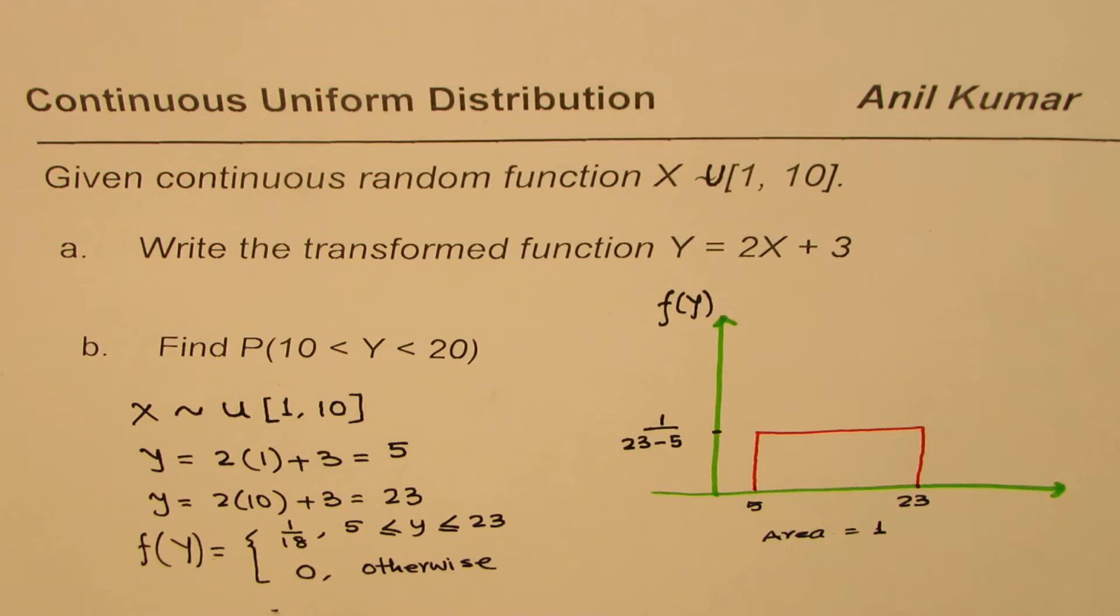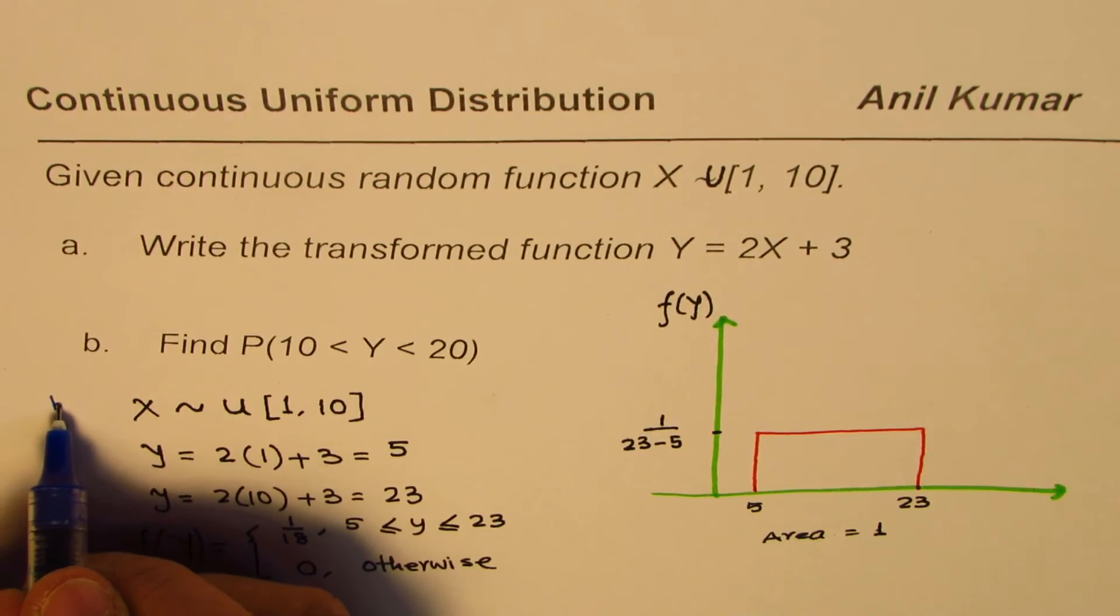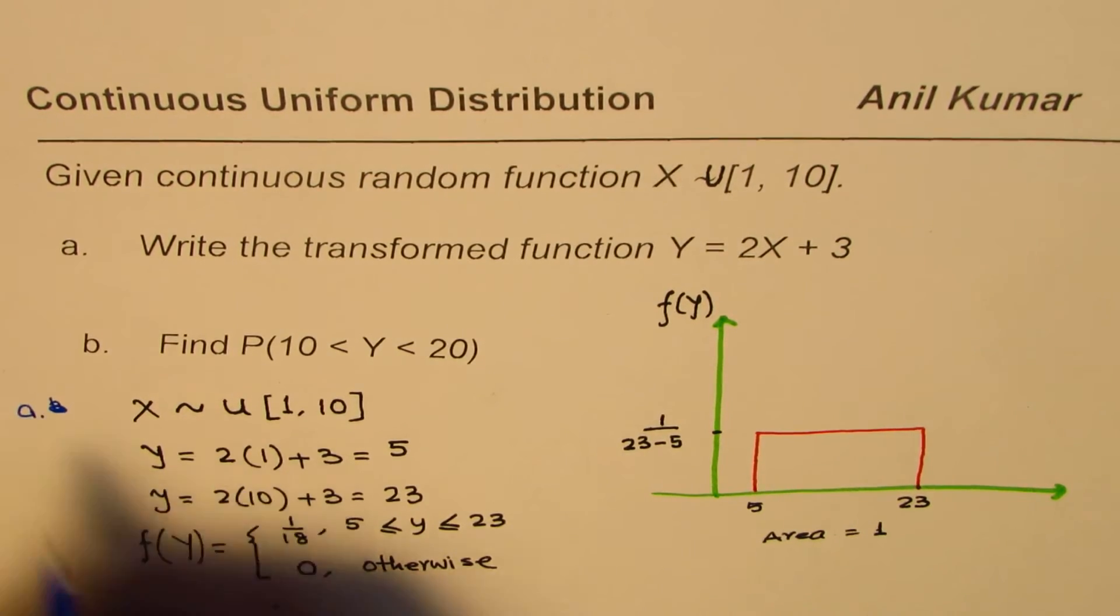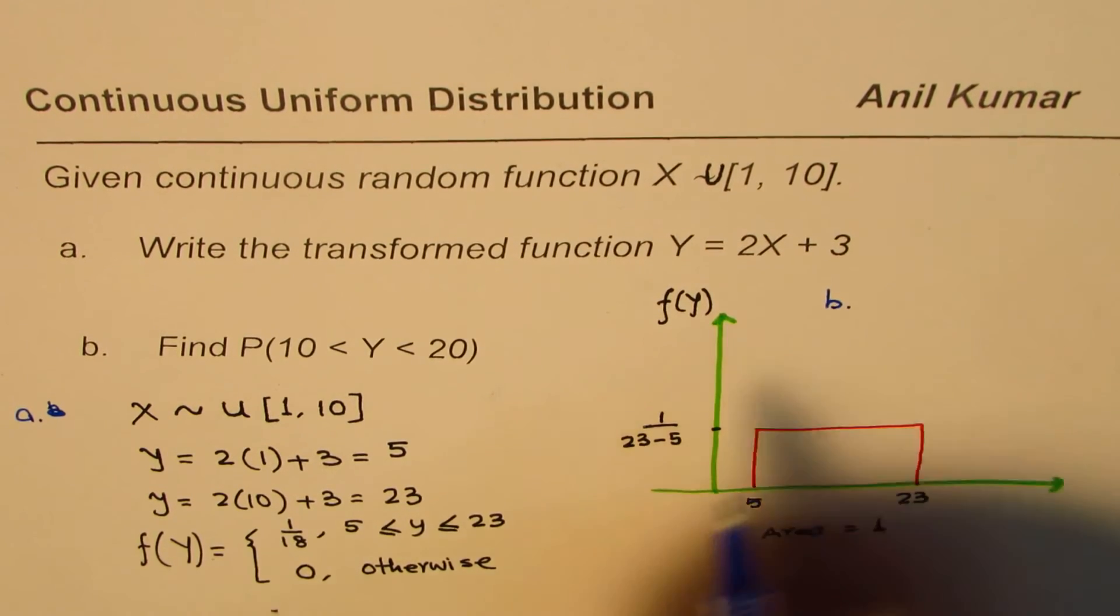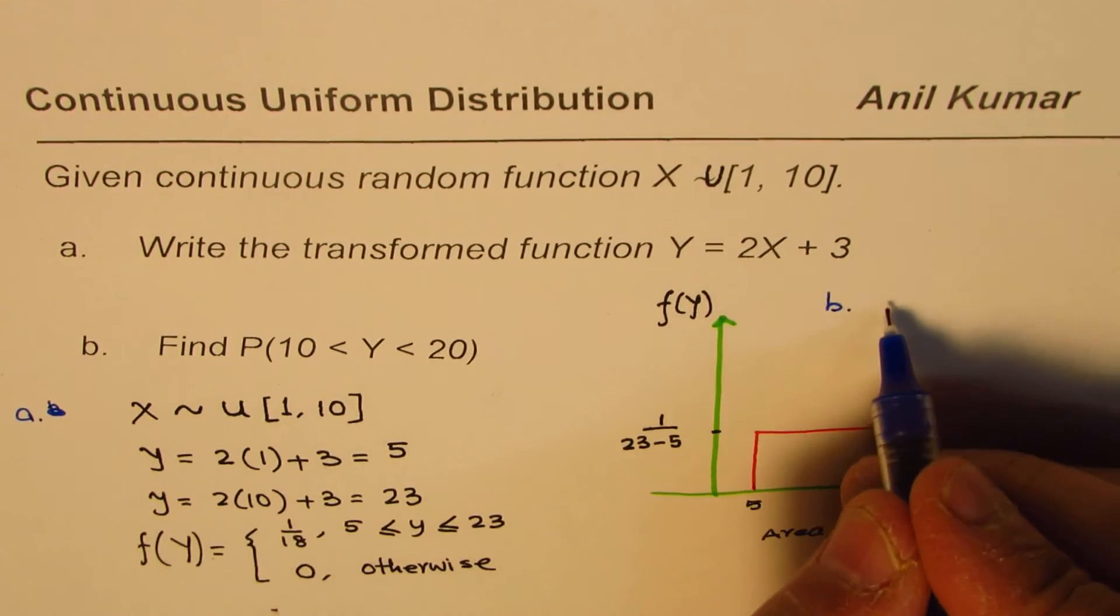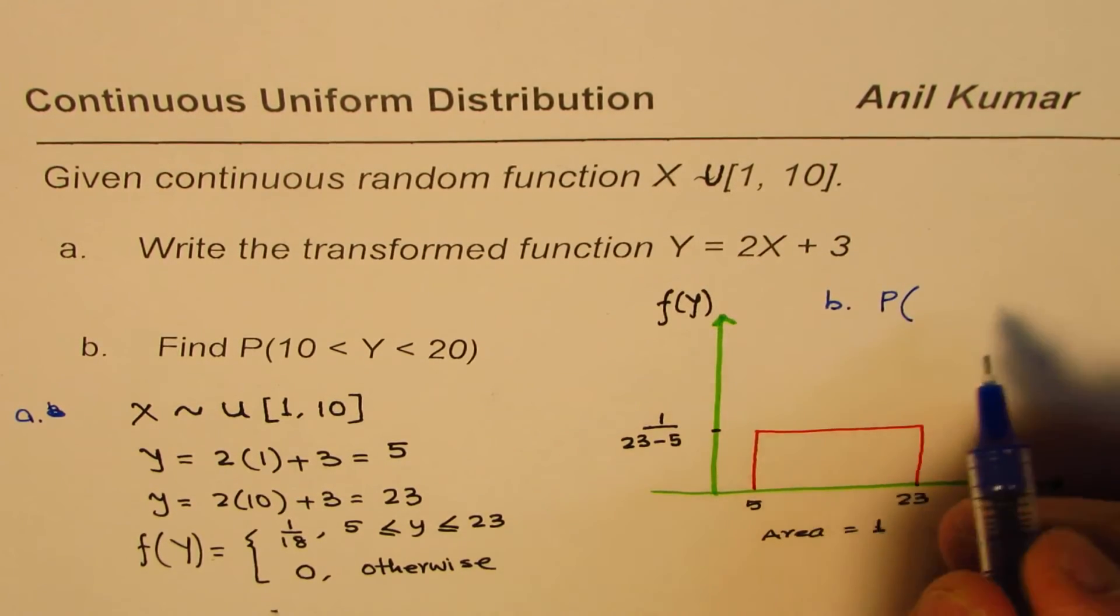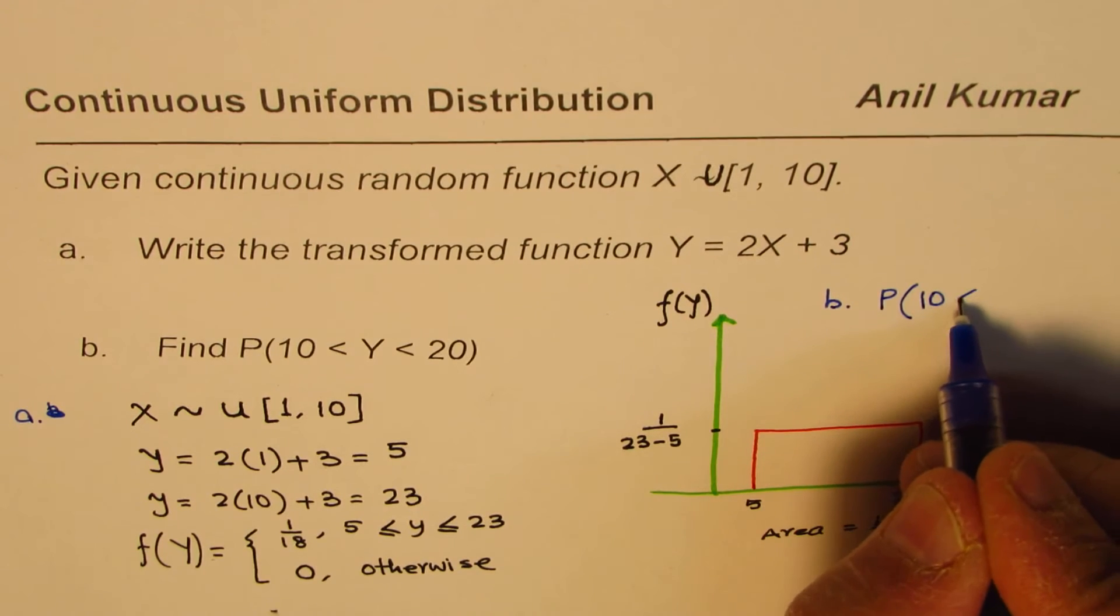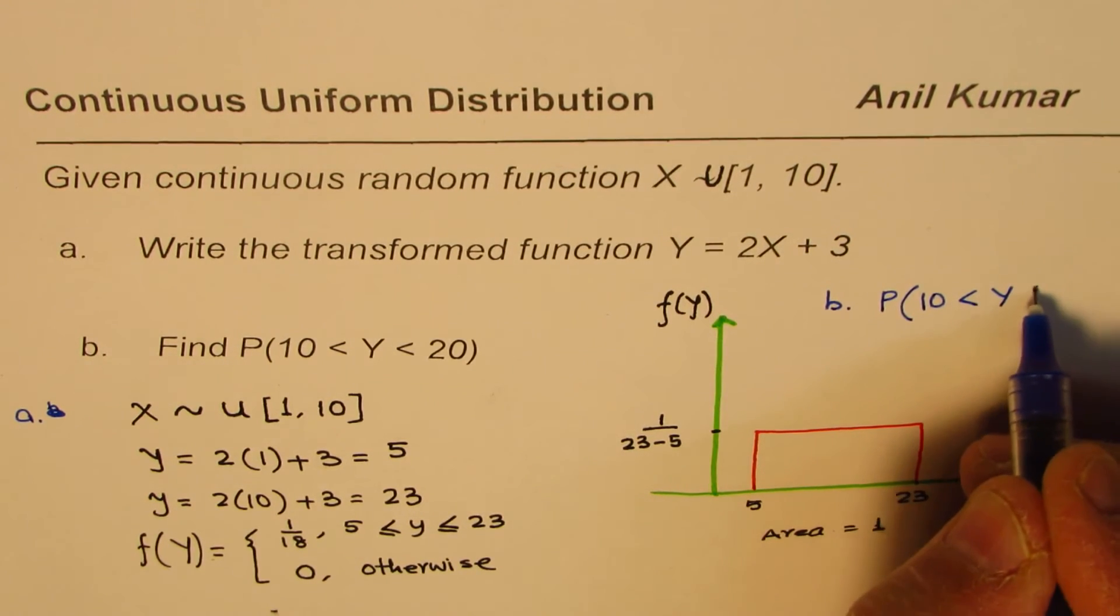Now this is part A. Let us see how to solve the part B, which is to find the probability, right? So this is part A. Let us solve part B now.